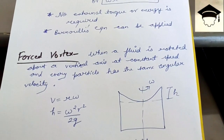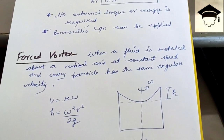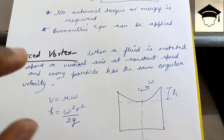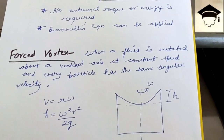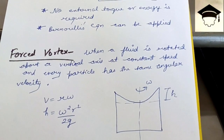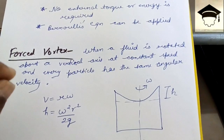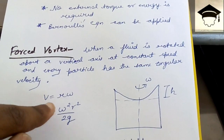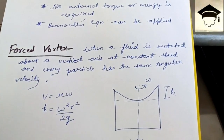The general equation for forced vortex is v equals r·ω. We have to supply external energy or torque to produce this motion. Bernoulli's equation cannot be applied to forced vortex flow.